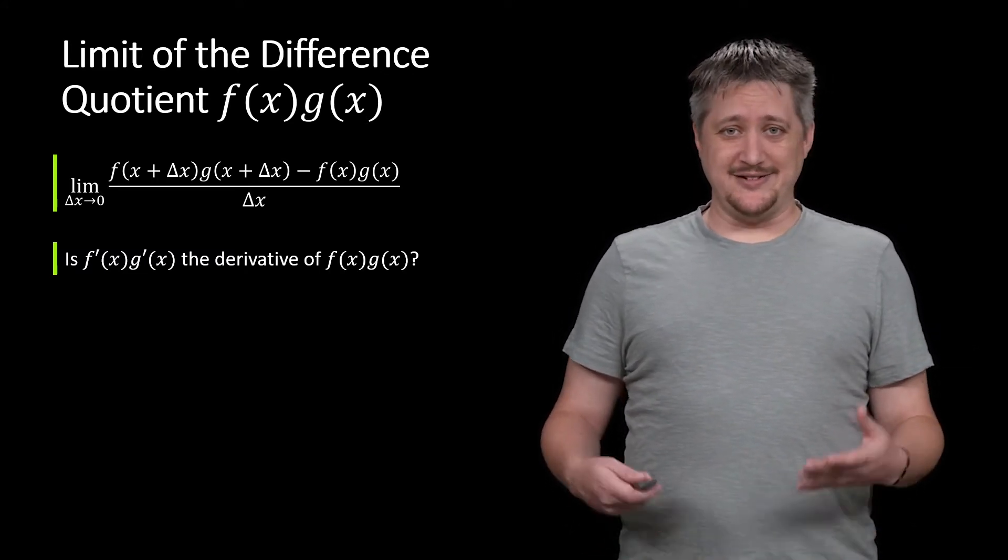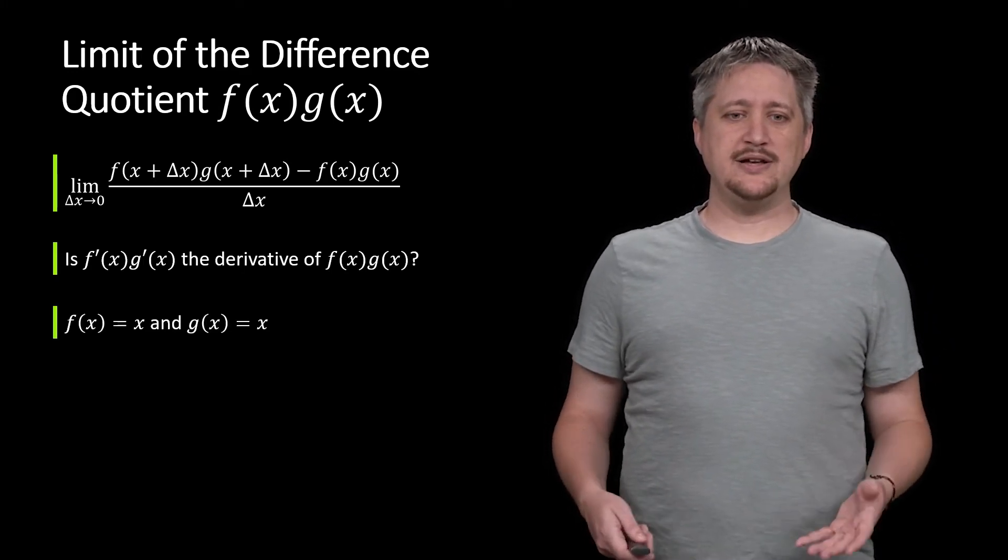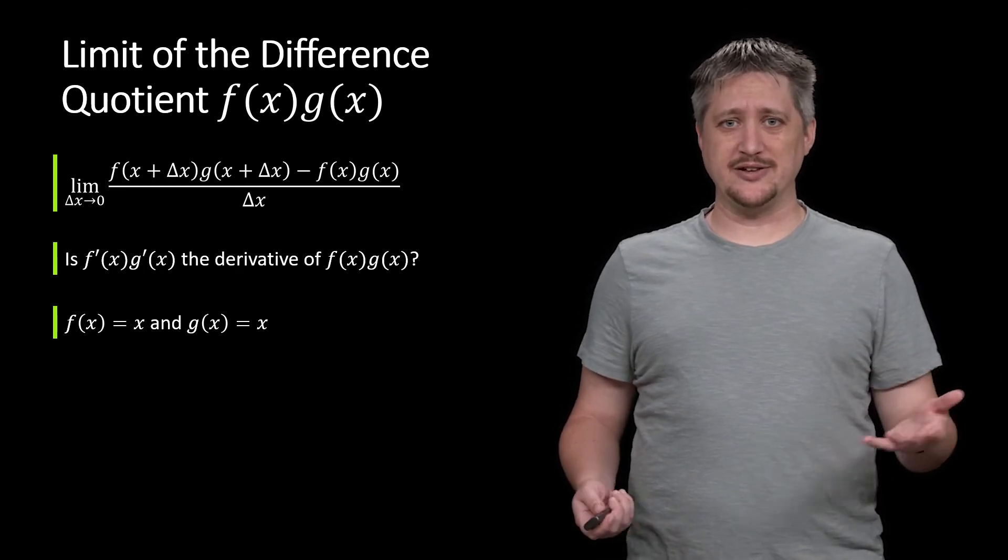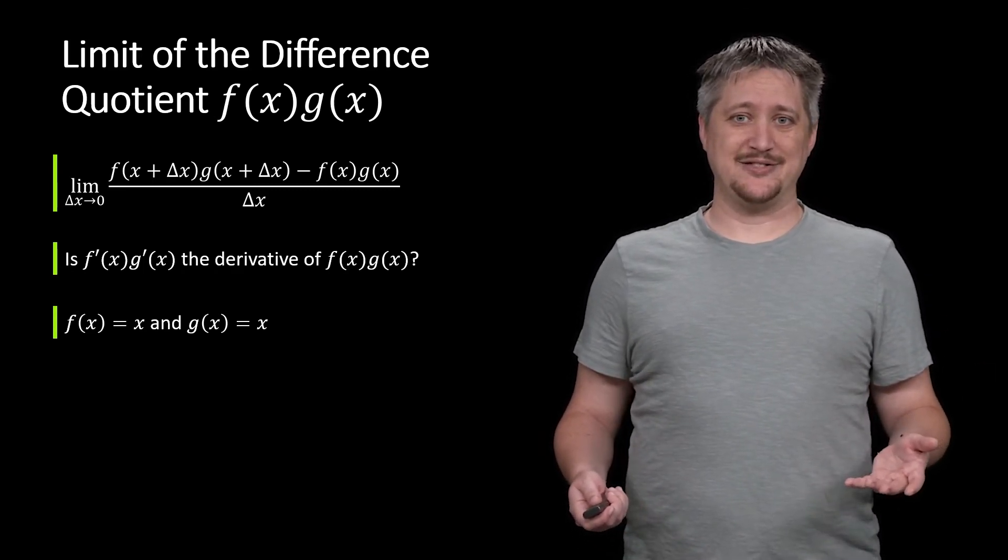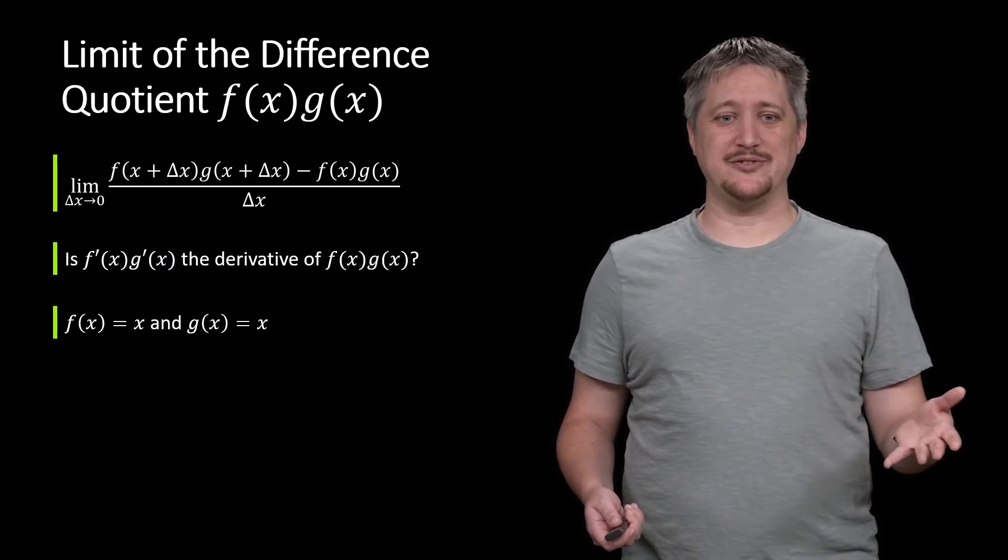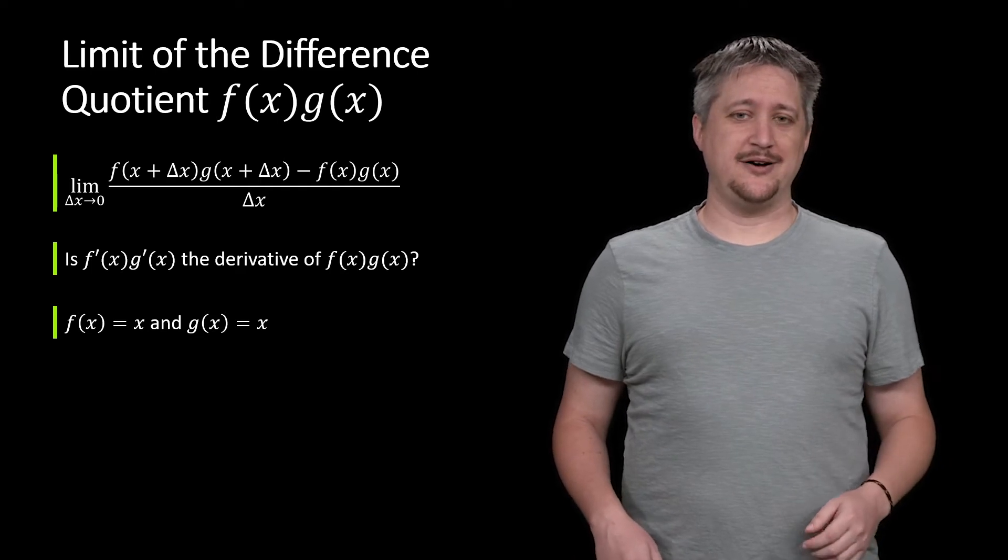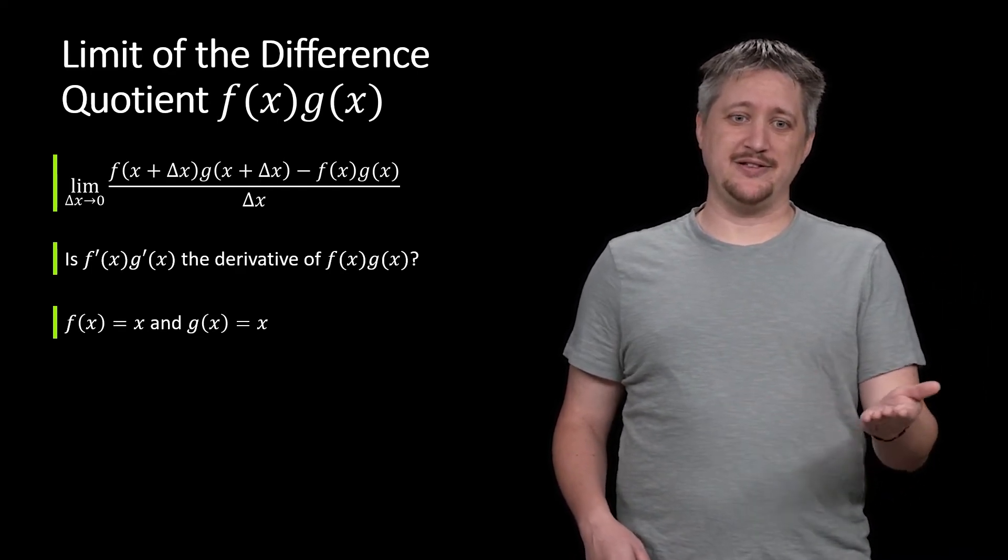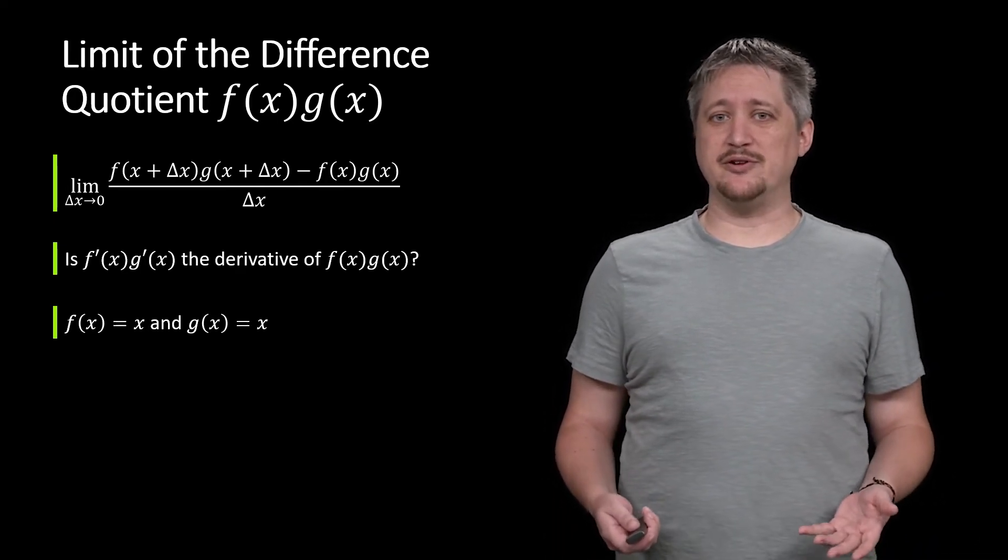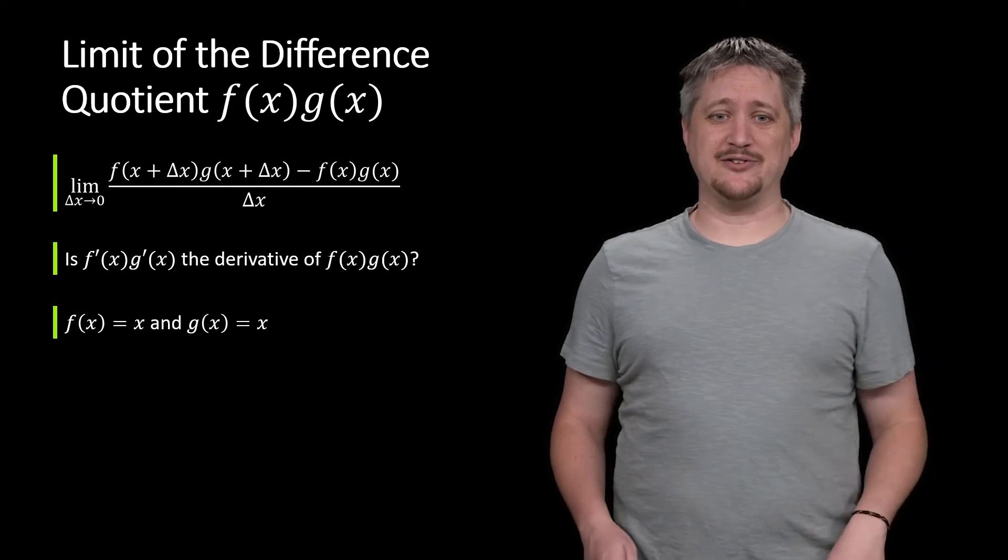So we want to ask, is the derivative of f(x) times g(x) just f'(x)g'(x)? Because that's what it would do if the limits went through nicely. Unfortunately, we can see this isn't the case by just doing a simple test case. What if f(x) = x and g(x) = x? These are nice ones to pick because they're very easy to find the derivatives. Both of these have derivative 1.